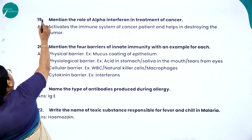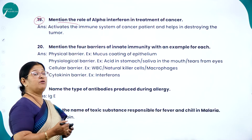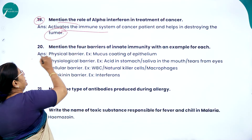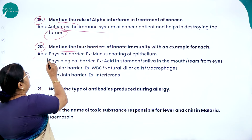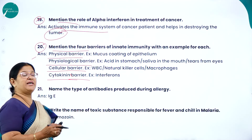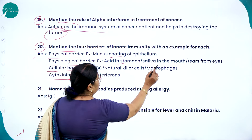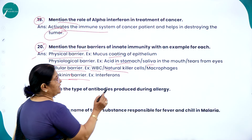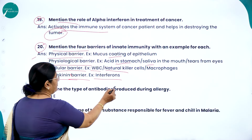Mention the role of alpha interferons in treatment of cancer. Alpha interferons activate the immune system of the cancer patient and help in destroying the tumor. Mention the four barriers of innate immunity with an example for each: physical barrier — mucous coating of epithelium; physiological barrier — acid in stomach, saliva, tears; cellular barrier — white blood cells, natural killer cells (NKC), and macrophages; cytokine barrier — interferons.